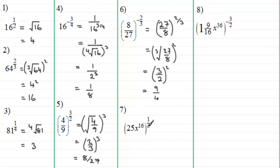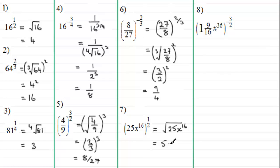Number 7: (25x to the power 16) all to the power a half. The half means we take the square root of 25x^16. The square root of 25 is 5. For x to the power 16, we need to be careful — when taking the square root it's not x to the power 4, it's x to the power 8. We simply multiply the powers: 16 times a half is 8. So the answer is 5x^8.